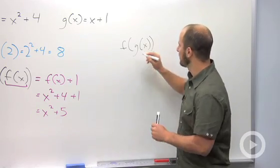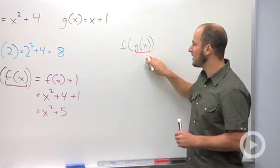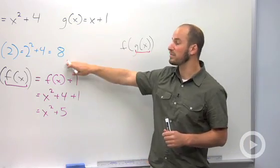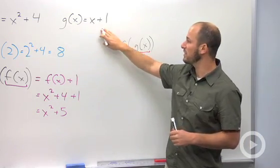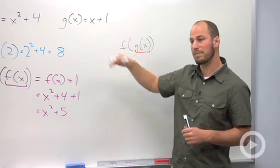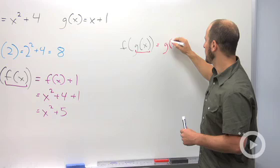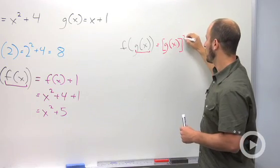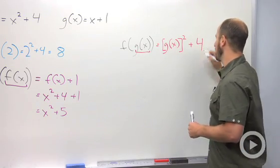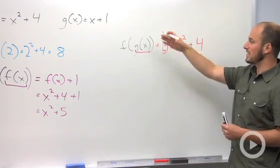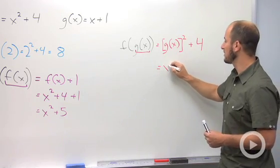Just like we had here, we've plugged in 2 into f. Here we're just plugging in g of x. So what we end up getting is g of x quantity squared plus 4. We know what g of x is, it's x plus 1, so this is just x plus 1 squared plus 4.